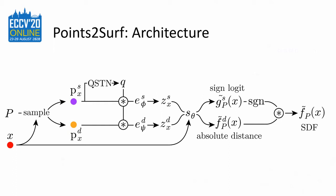The reason for the split is that we can turn the inside-outside prediction into a classification, which is easier to learn than a regression. In the end, we multiply the floats and get the signed distance.